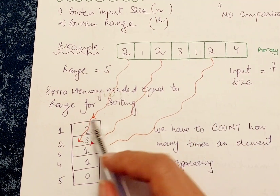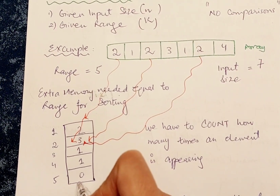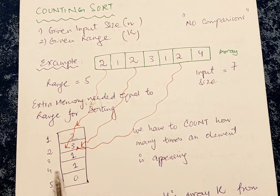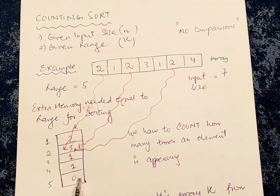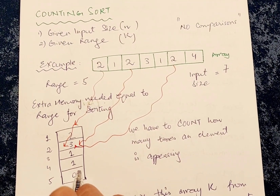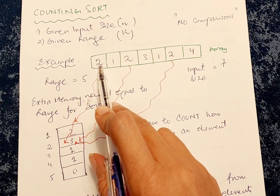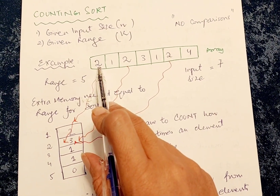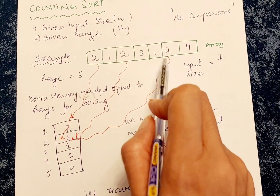Now we know these two inputs, so let's proceed. I have drawn an extra memory location — an extra array for sorting — which I am going to call the range array. The size of the range is five, so I have made five pockets in this array. Now, what I'm going to do is look at each element of the given array and count how many times it appears. The first element is appearing one time, two times, and three times — so one, two, three.